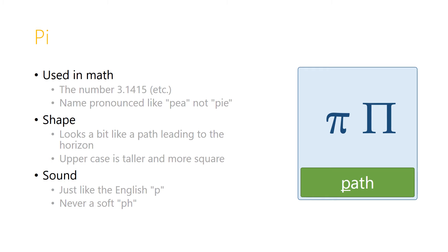The shape looks a little bit in the lowercase like a path leading to the horizon, doesn't it? Two lines converging a little bit on a horizontal line that could represent the horizon. And so we can connect the lowercase letter P with the word path to help us remember its sound.